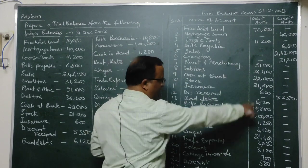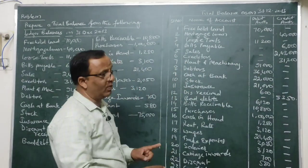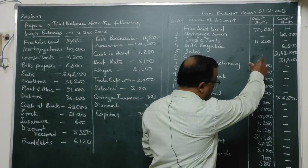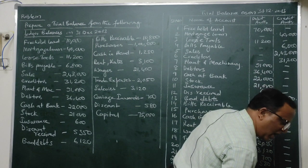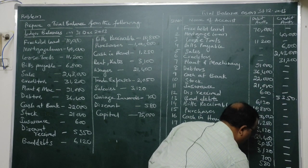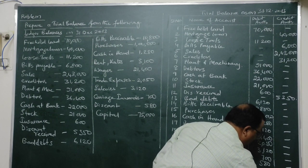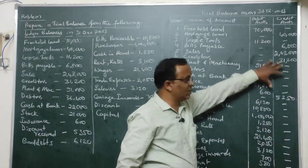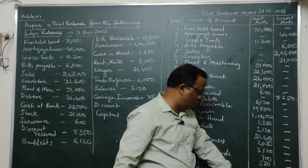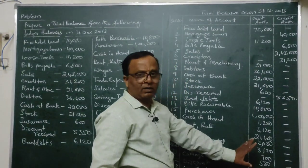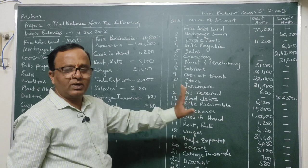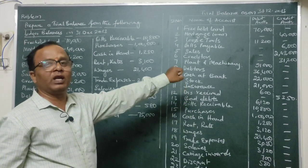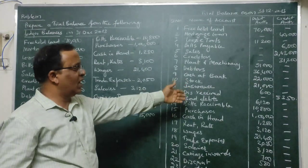Now total up the debit column and the credit column separately. The total of the debit column comes to 4,13,350 and the credit column also comes to 4,13,350. Both totals tally, which means there are no errors — at least arithmetically the debits and credits are recorded correctly. The trial balance has tallied. However, as explained earlier, some errors may still remain even when the trial balance tallies — those are the errors not disclosed by the trial balance.